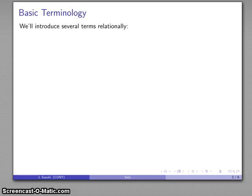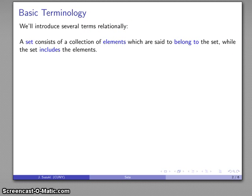And we'll introduce several terms, and rather than trying to define what these things are, we're going to define how these things relate to each other. We'll define these terms relationally. So we might say, first of all, that a set consists of a collection of elements which are said to belong to the set, and the set includes the elements. So here we indicate the relationship: set contains elements, elements belong to the set.